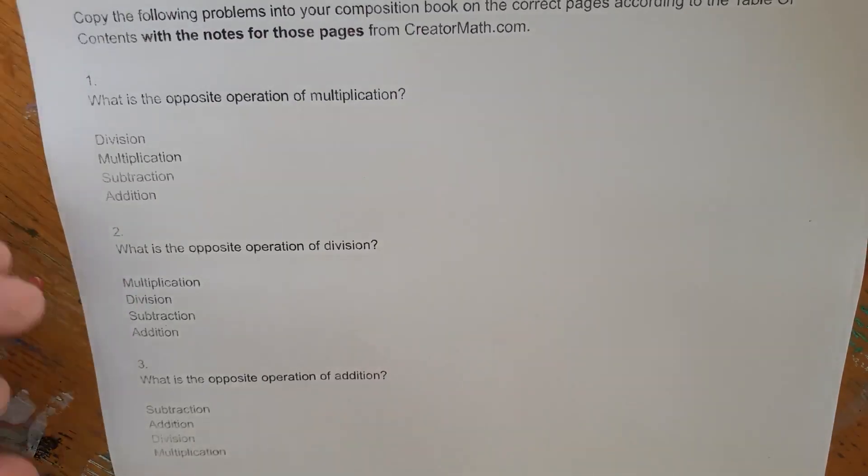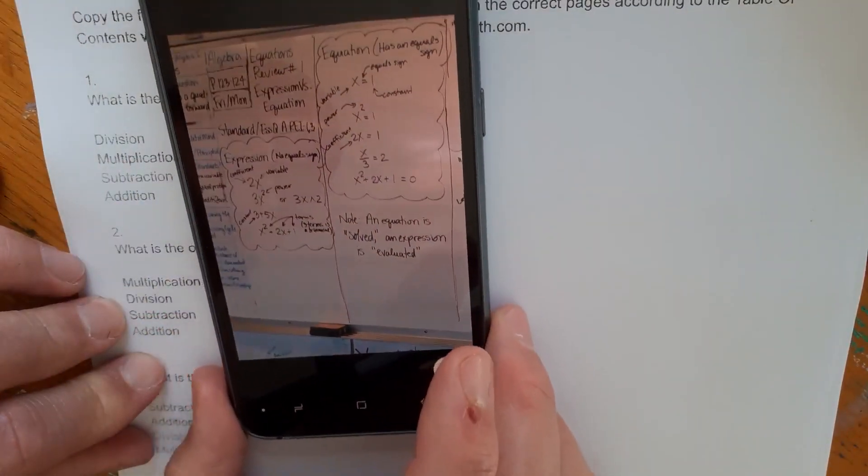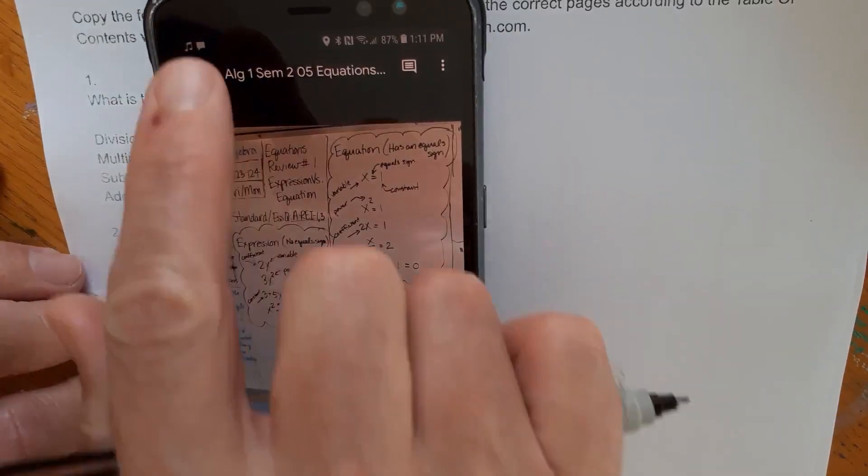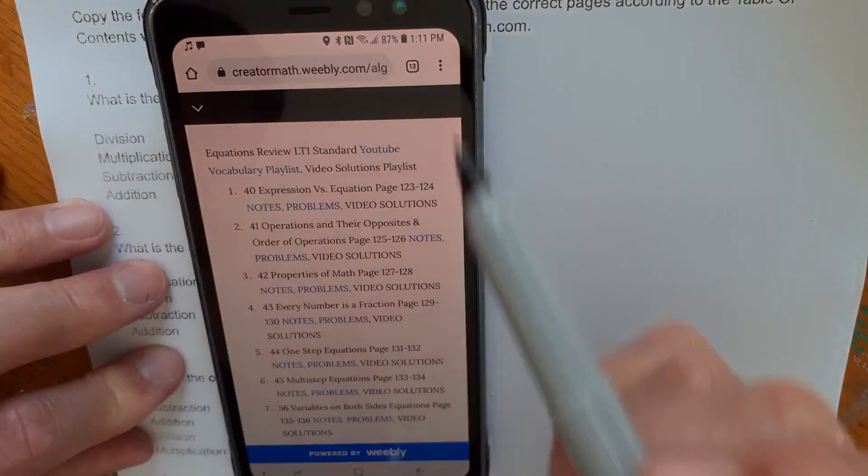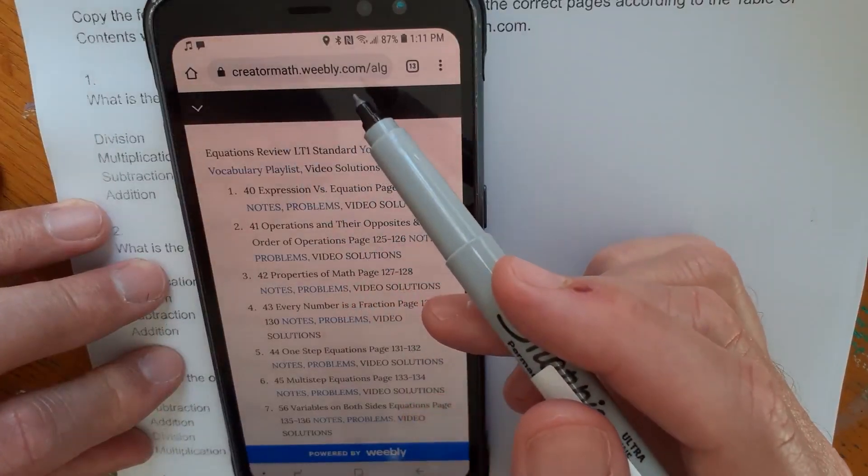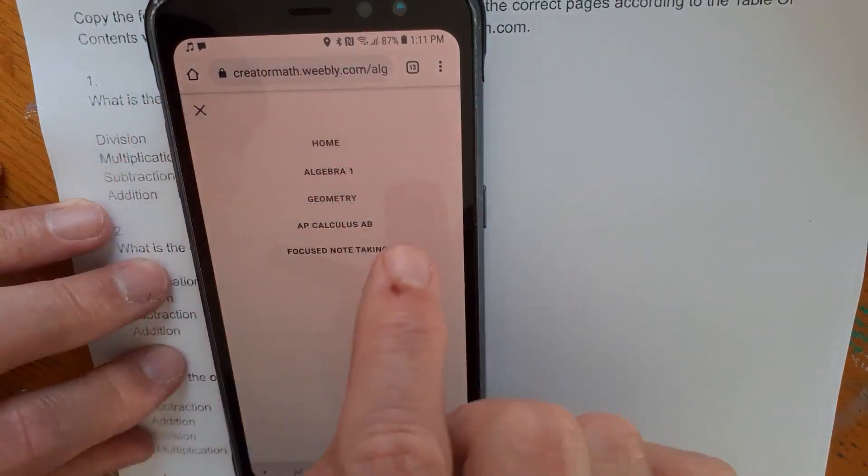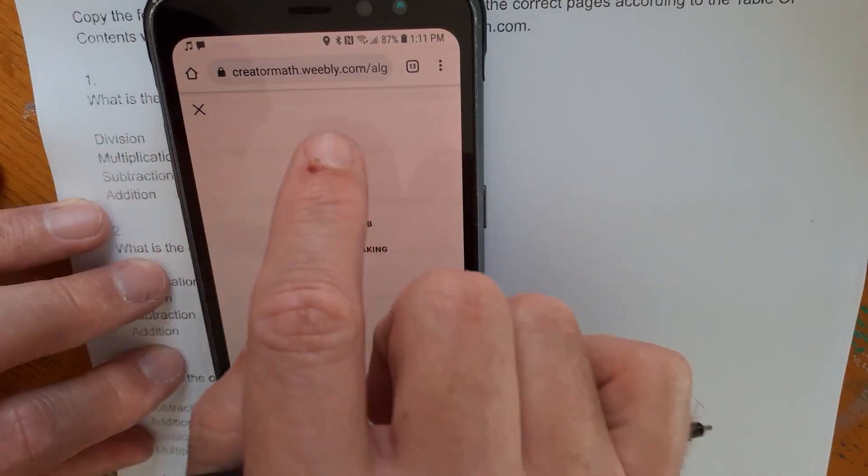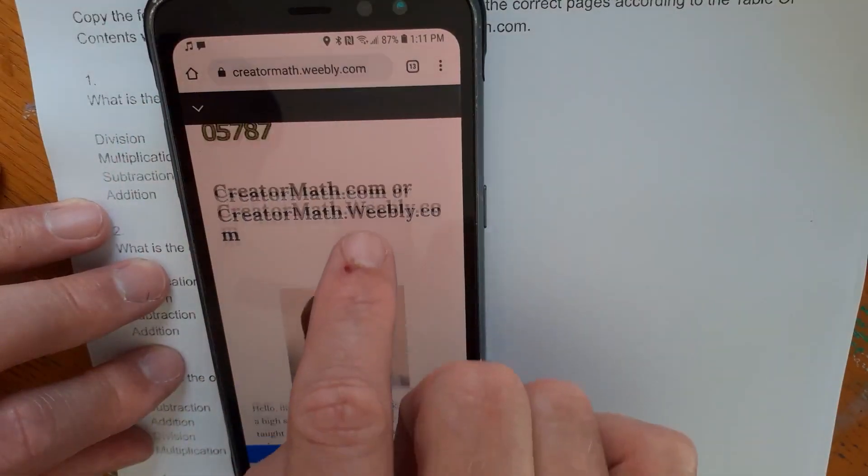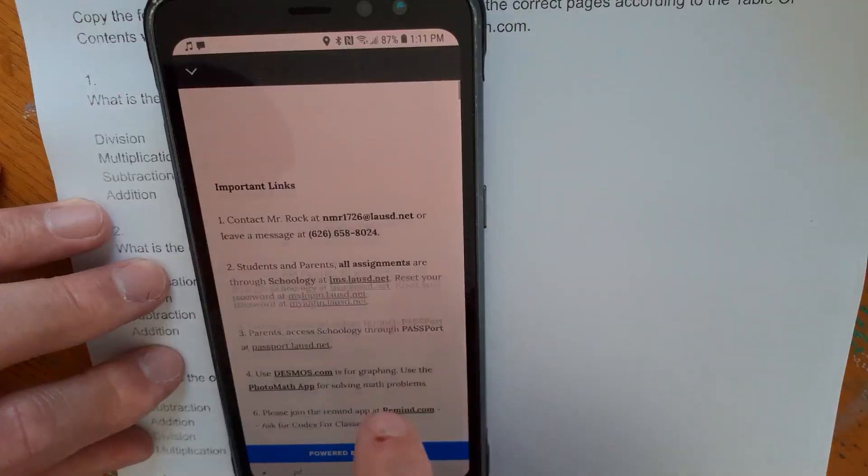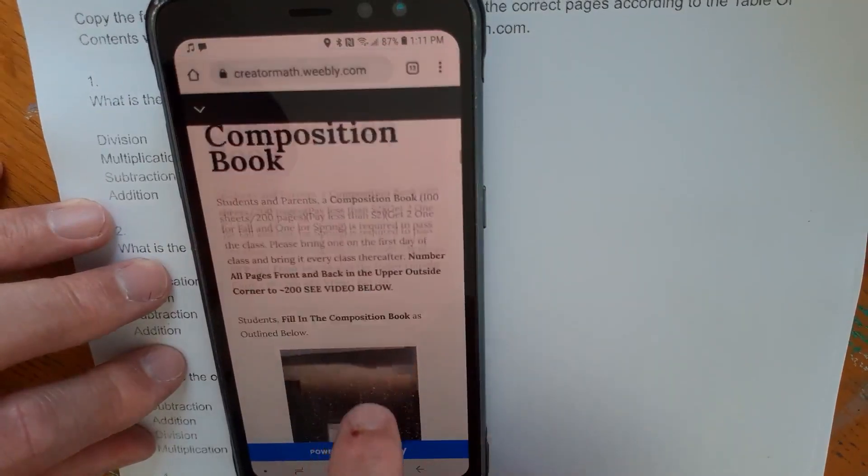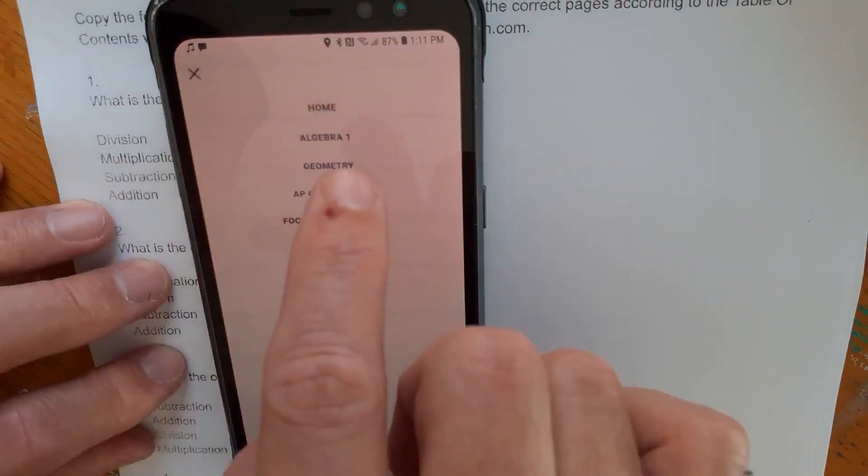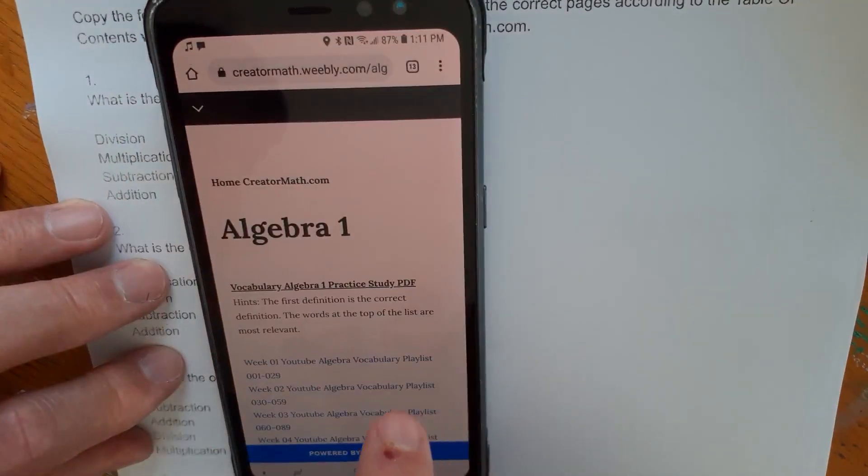Let me give you some background. Let's go back. Here's the website, creatormath.weebly.com. Google that. Let's go to home page first so you can see what that looks like. All of your composition book stuff is on this home page. Just go down to where you see composition book and follow all the directions under it. But we're going to go to the Algebra 1 tab. That's where all the notes.